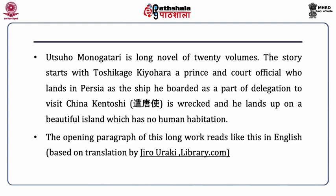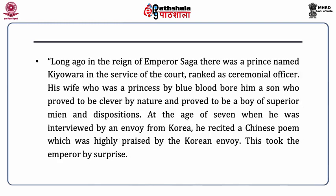Introduction: Utsuho Monogatari is a long novel of 20 volumes. The story starts with the character Toshikage Kiyohara, who was a prince and a court official who lands in Persia after the ship he boarded as part of the Kentoshi is shipwrecked. He survives but is drifted to an unknown land. The scene is described in the opening paragraph of the novel like this.